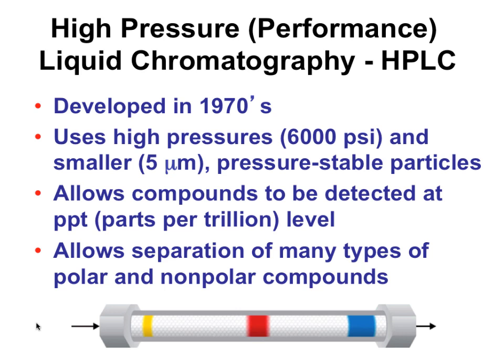The most common method for separating small molecules or metabolites is high pressure or high performance liquid chromatography — HPLC — which has been around for 40 years. The essence is to use not atmospheric pressure but to pump things up to almost a thousand times atmospheric pressure — about 6,000 pounds per square inch — working with tiny pressure-stabilized beads that look like sand. With HPLC coupled with suitable detection systems, we can detect things down to the parts per trillion level. You can separate both polar and nonpolar compounds by choosing different column types.